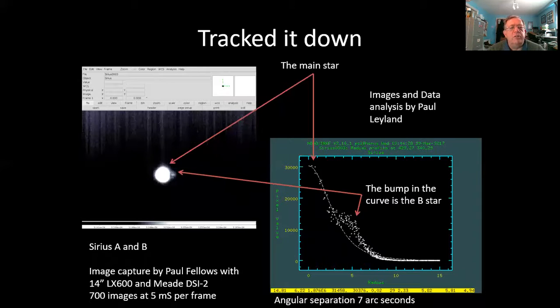And here's the results that we got. On the left we have an image where you've got the somewhat overexposed central image of Sirius A, but just sneaking in on the left there is the little tiny image of the pup. The data on the right has been carved out of that. Paul Leyland did this and split out the brightness from the central point of Sirius and turned it into a graph.